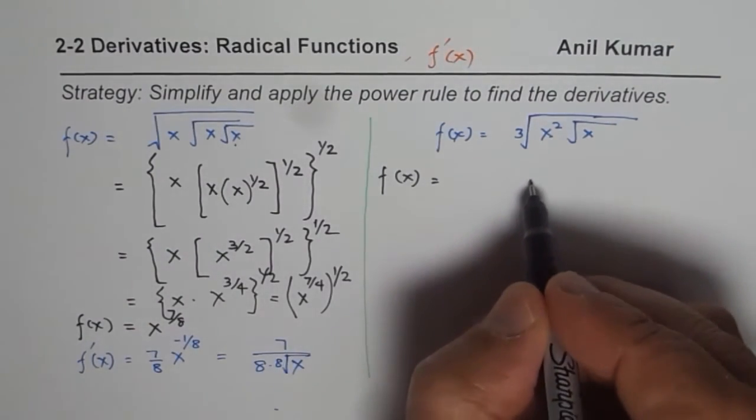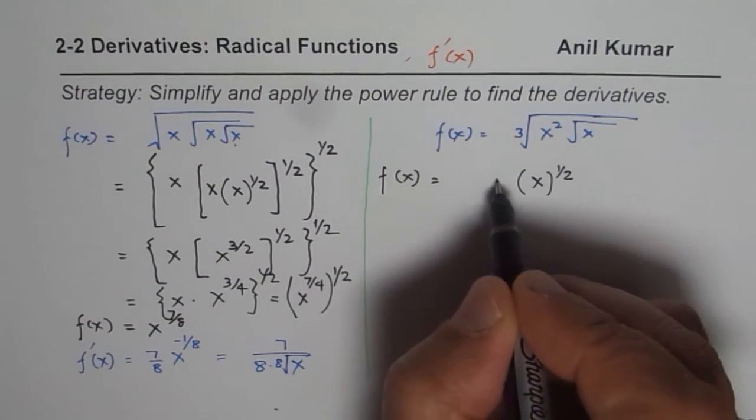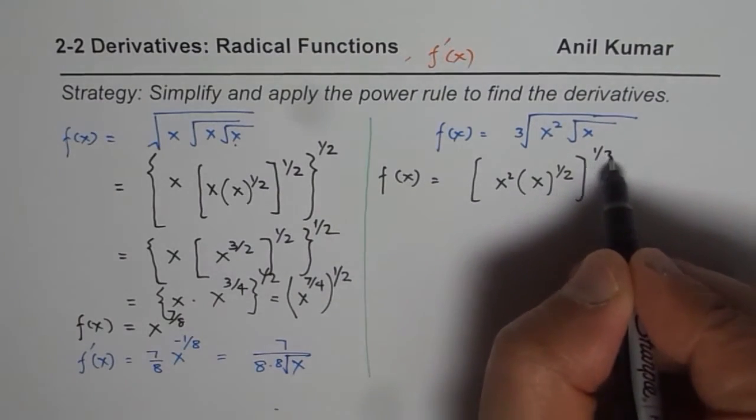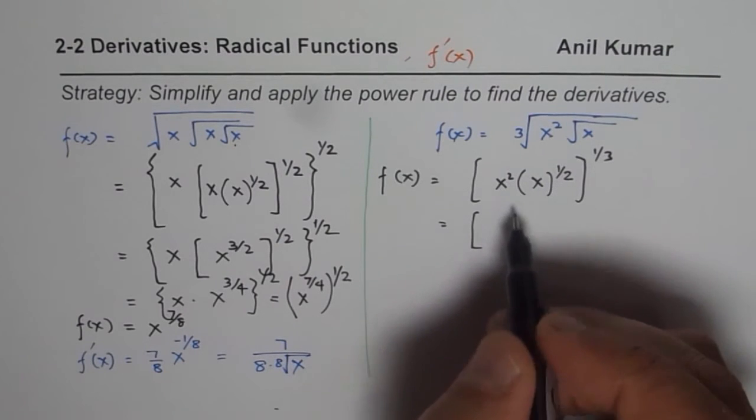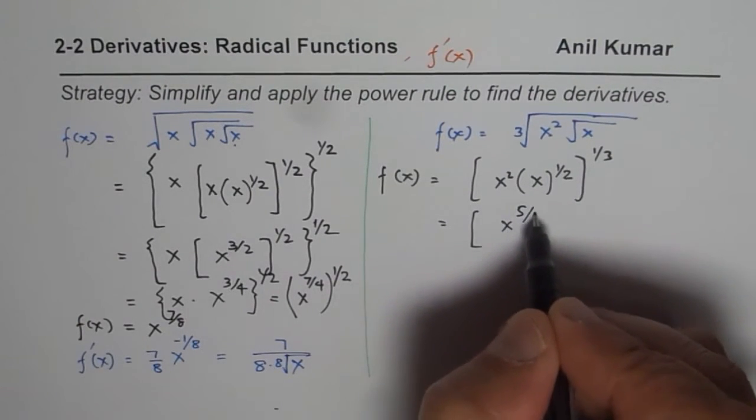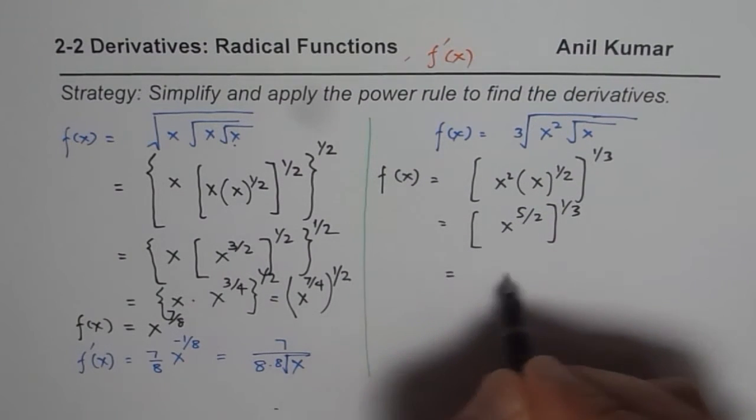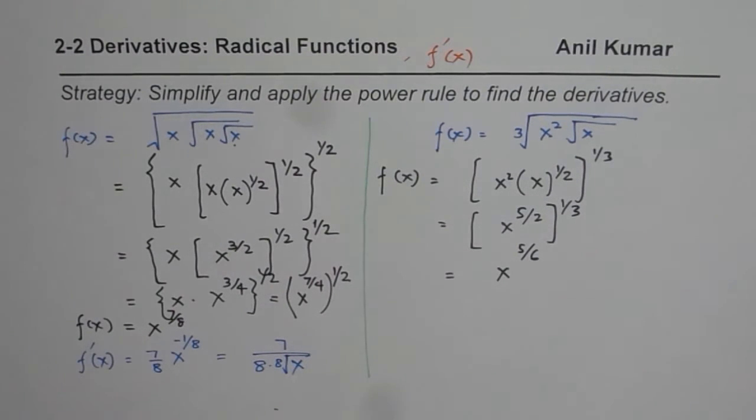You could actually do similar operation as we did here. So we will start from inside functions. So x and here we have to the power of half multiplied by x squared and everything is to the power of 1 over 3. Now let's combine these two terms. Half plus 2 is 5 over 2, 5 over 2 to the power of 1 over 3. And that gives you x to the power of 5 over 6. So that is your function.